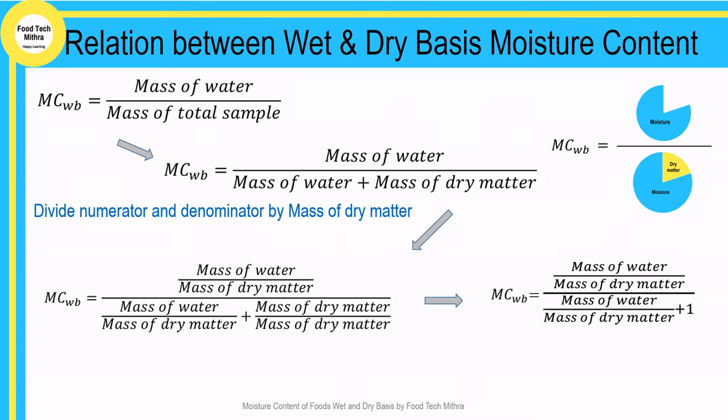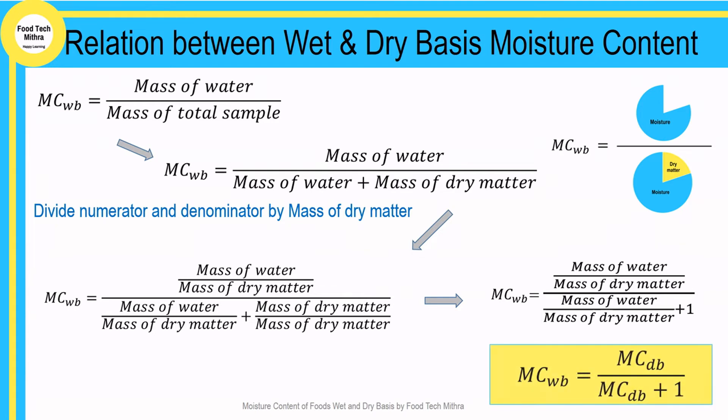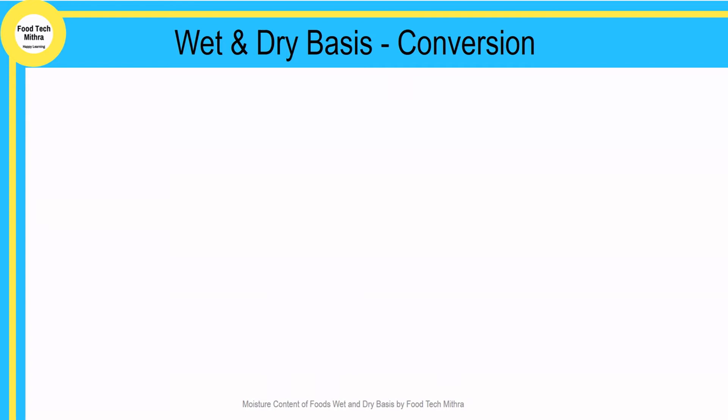The numerator, mass of water divided by mass of dry matter, is the moisture content on a dry basis. So the equation becomes: moisture content on a wet basis equals moisture content on a dry basis divided by (moisture content on a dry basis plus 1).